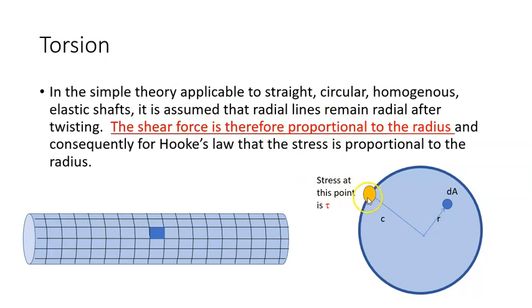And what this assumption is, that if the stress here is tau, then the stress here will be proportional to that, and it would be r over c. So it would be the ratio radius, or the distance from the center of this to the radius c.